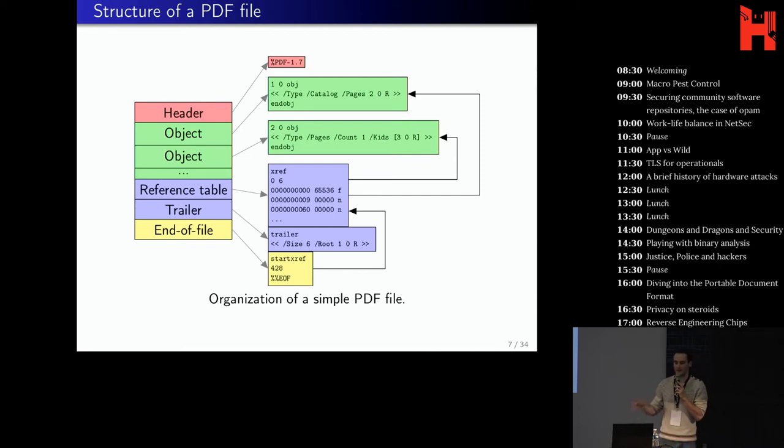Then at the file level, these objects are organized in four parts. First you have a header that identifies the PDF file format and the version. Then you have a collection of indirect objects that can be referred to by other objects. Then there is a reference table that indicates the location of these objects so that you can fetch them directly. Then there is a trailer which is the logical root of the document. And last the end of file indicates the location of the reference table. So you can see that you can parse the file backwards from the end.